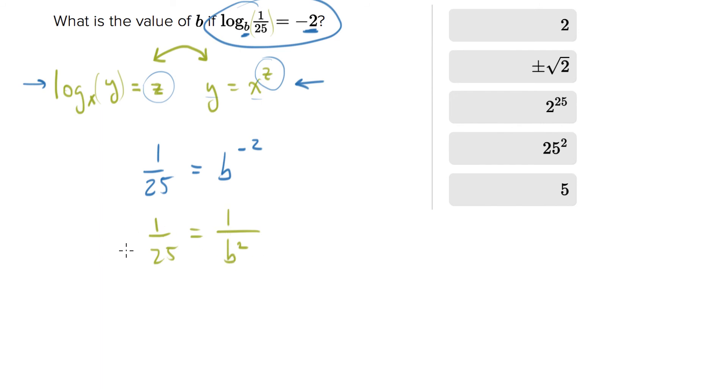Now we can take the square root of both sides. We have two perfect squares here. So one over 25 is a perfect square, that is one over five. One over b squared is a perfect square, that's one over b. So you can see that five equals b, which is the fifth answer choice.